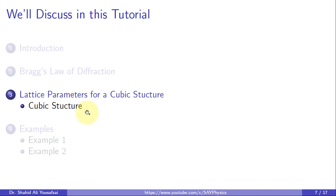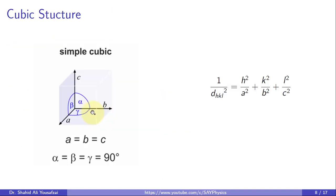Lattice parameters for a cubic structure. It is understood that the spacing between the planes in a crystal lattice, also known as interplanar spacing, is directly linked to the lattice constants and Miller indices.